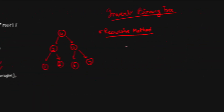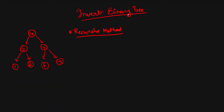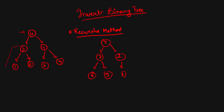Now let's understand the recursive method, which is the easier approach. We use a top-down approach. From the root, we swap its left and right subtrees, then let the children handle the rest. So for root node four, we swap its left and right — the tree now reflects that swap at the root level.